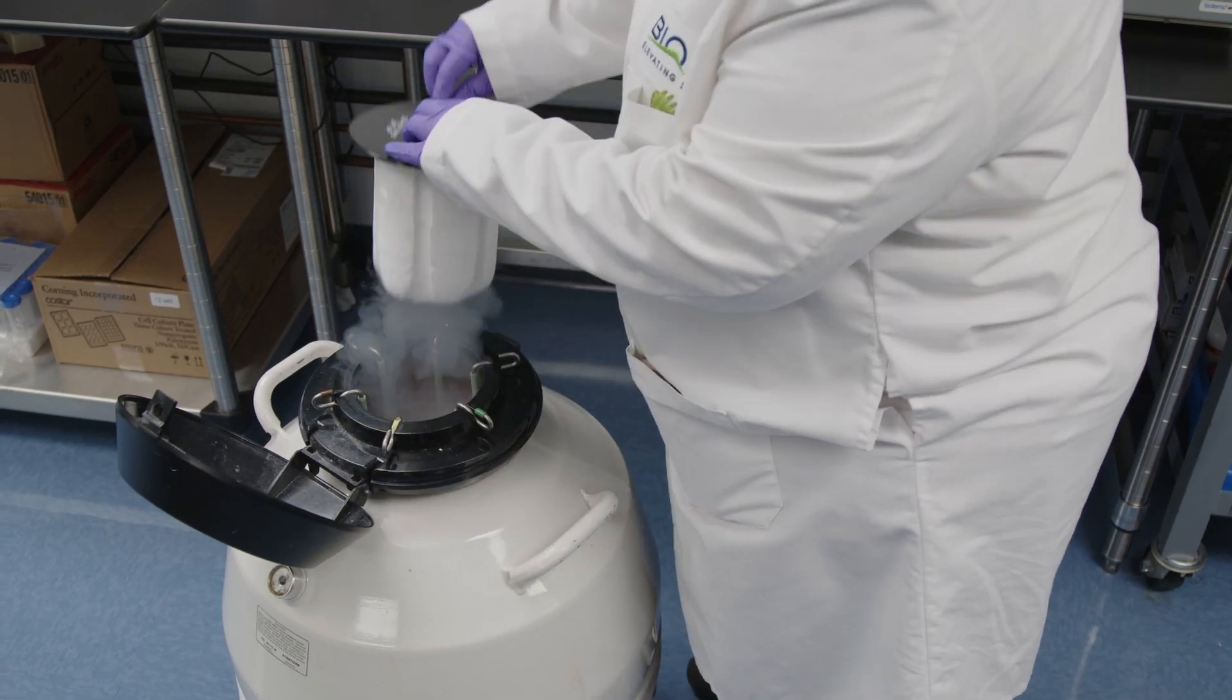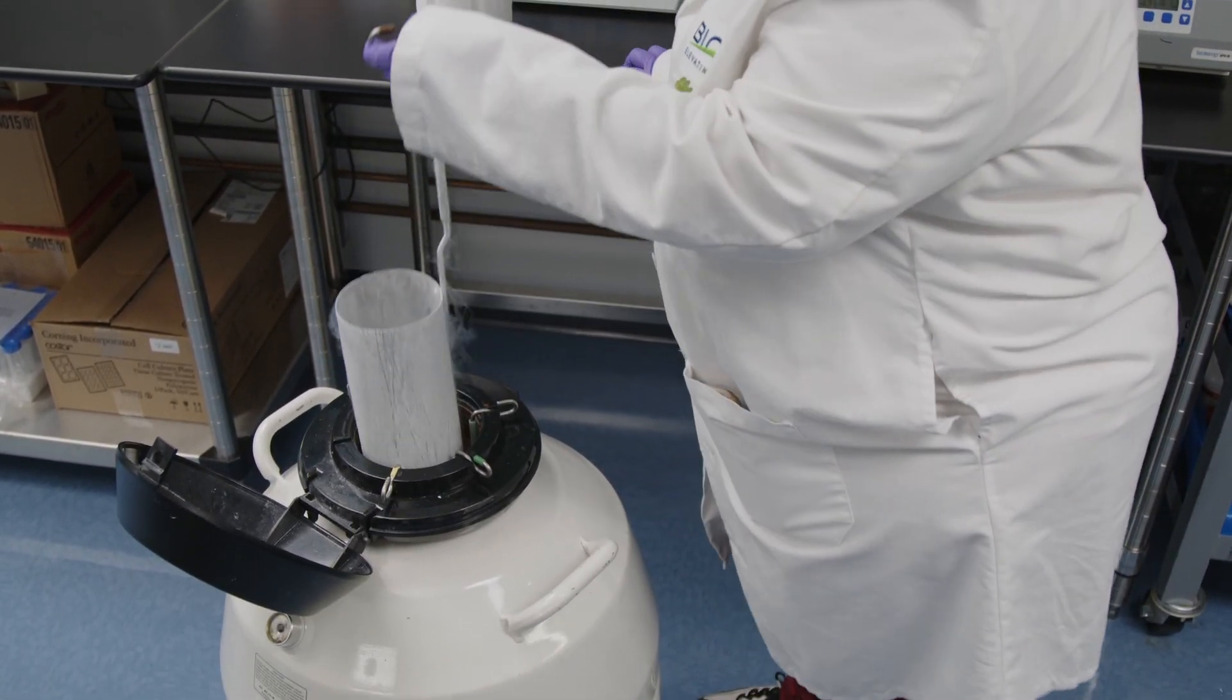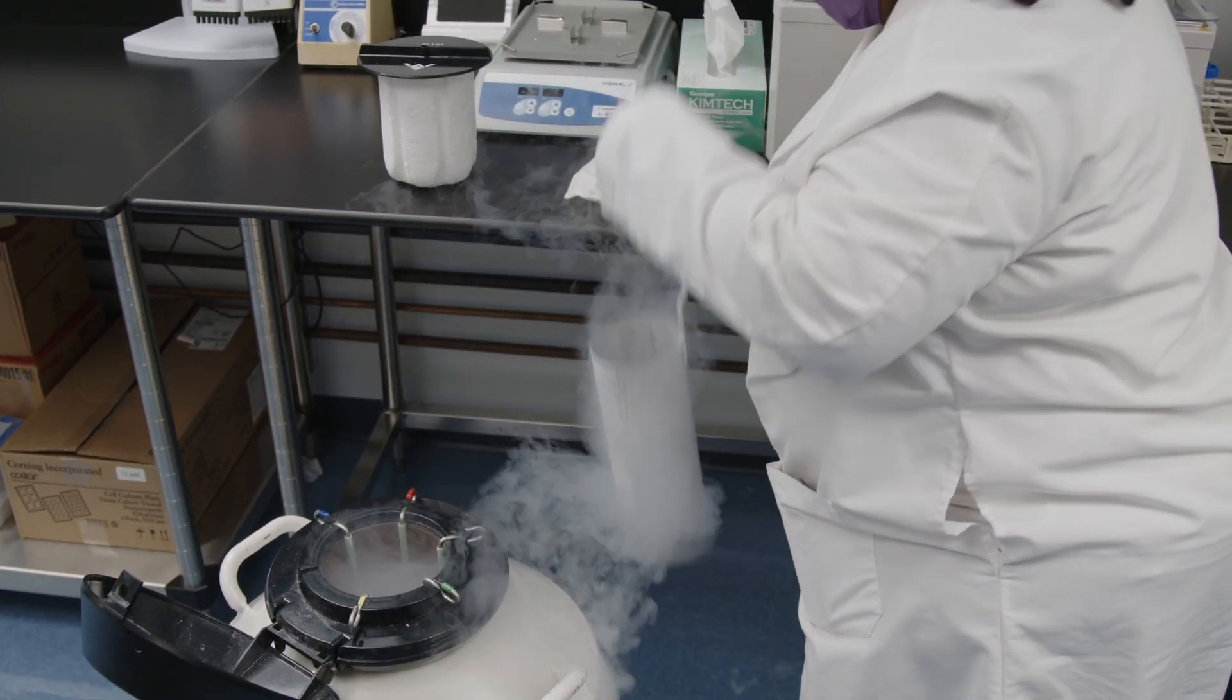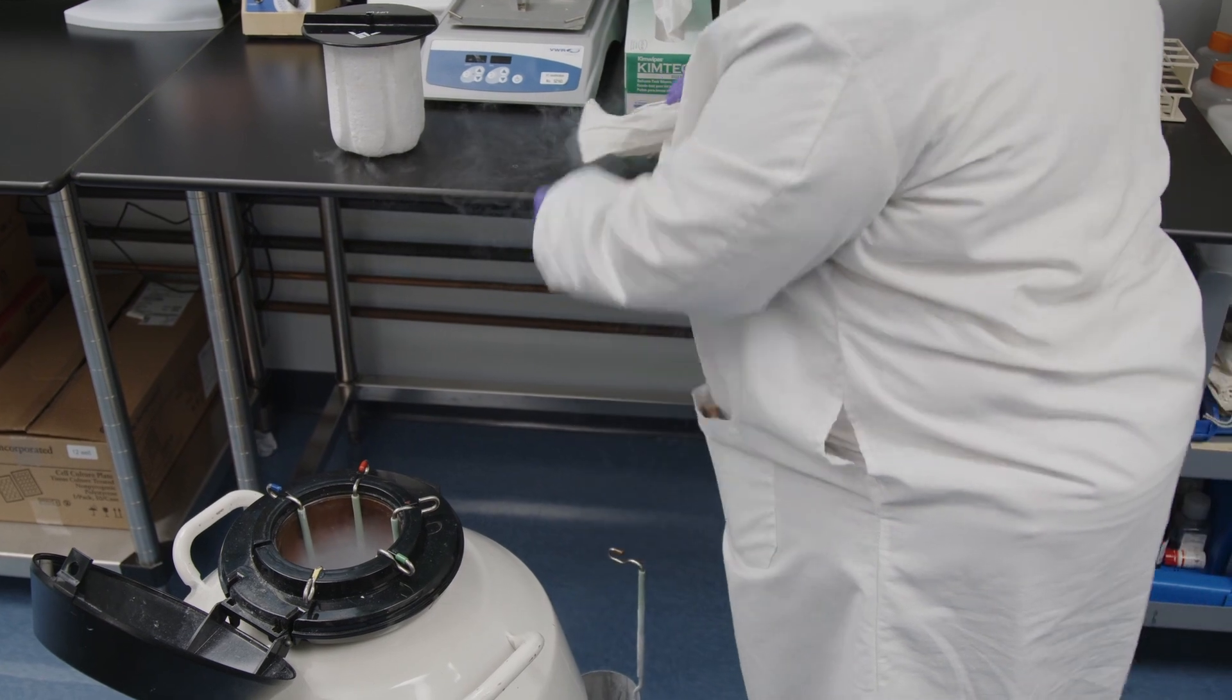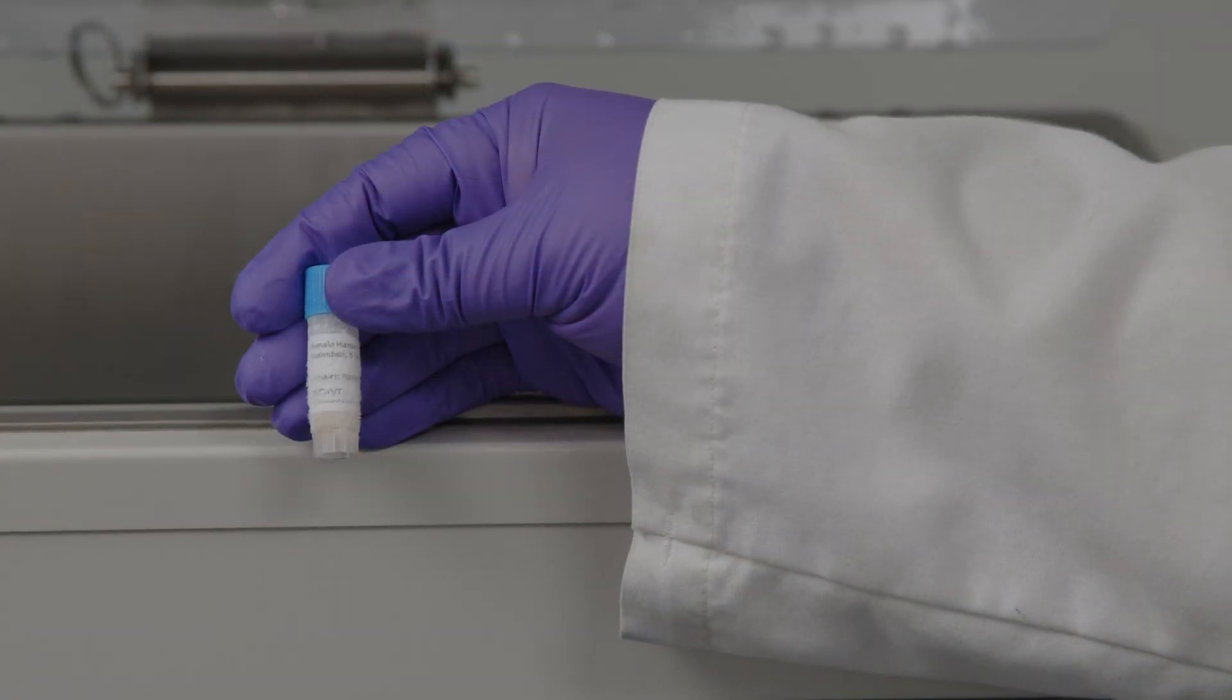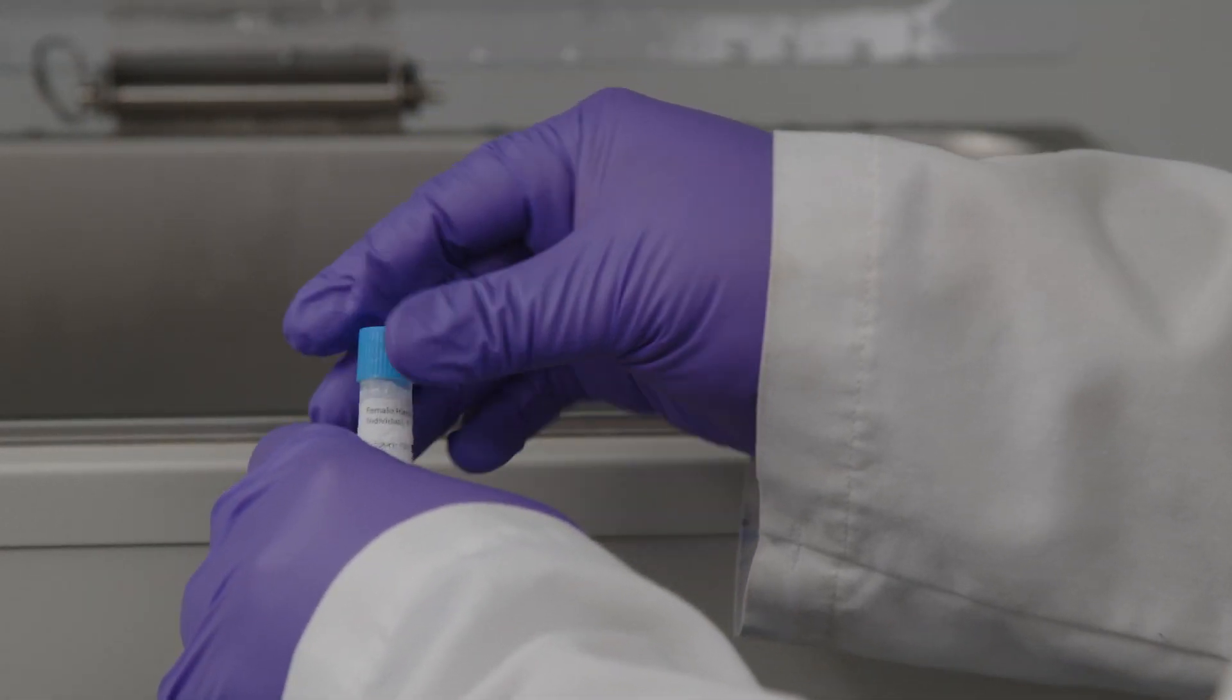Take a vial of human cryoplatable hepatocytes from the Dewar and gently loosen the cap to release the pressure. Then re-tighten the cap. Place the vial in the cryovial rack set in a 37 degrees Celsius water bath. Maintain the vial in the water bath for approximately 90 seconds to thaw the hepatocytes.